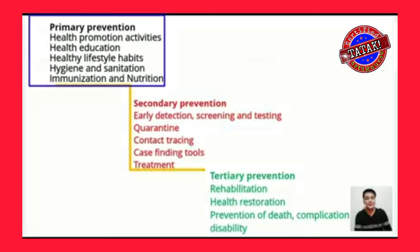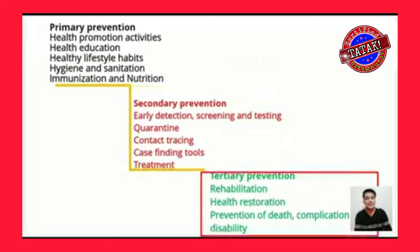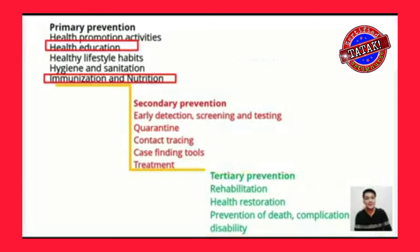Under secondary level of prevention: early detection of disease including screening tests, testing, diagnostic exams, quarantine, contact tracing, case finding, and treatment. Under tertiary level of prevention, it involves rehabilitation — more on health restoration, preventing death, complications, and disability. So when we say immunization, nutrition, and adequate rest, that is under primary level of prevention.